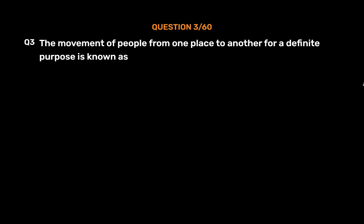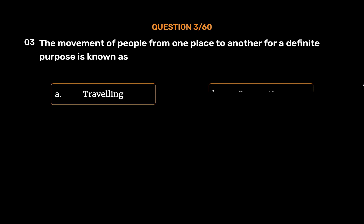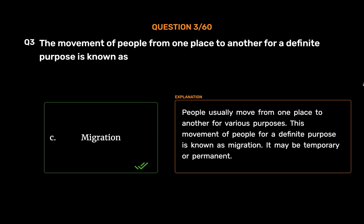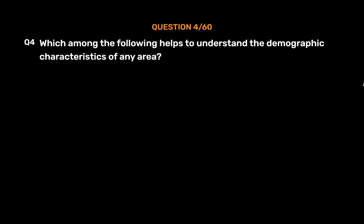Question number 3: The movement of people from one place to another for a definite purpose is known as — option A: traveling, option B: commuting, option C: migration, option D: none of these. The correct answer is option C, migration. People usually move from one place to another for various purposes. This movement for a definite purpose is known as migration. It may be temporary or permanent.